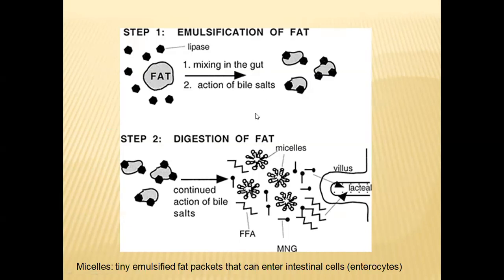In this way, emulsification of fats is achieved by bile salts present in the bile. In the digestion of fat materials, bile juice secreted by the liver plays a very important role. Even though bile juice does not contain any enzymes, it has bile salts, and these bile salts emulsify the fat materials so that big fat materials are broken down into small pieces and the food mixture is converted into an emulsion-like structure.